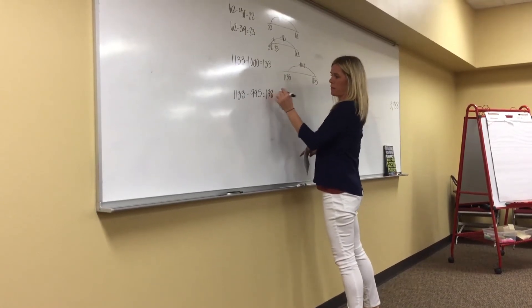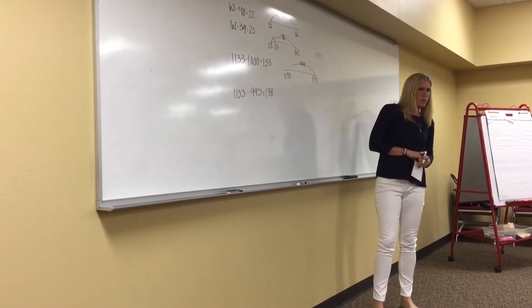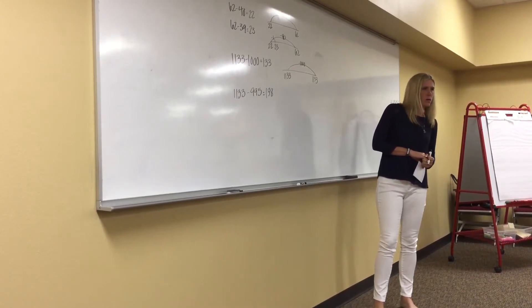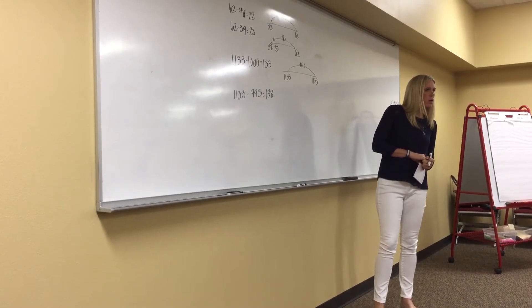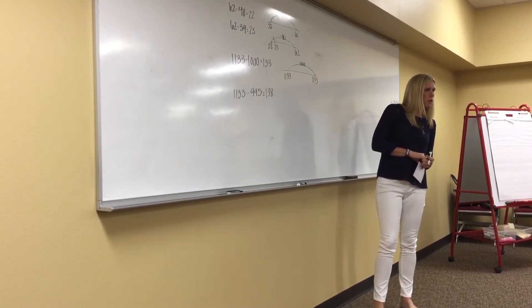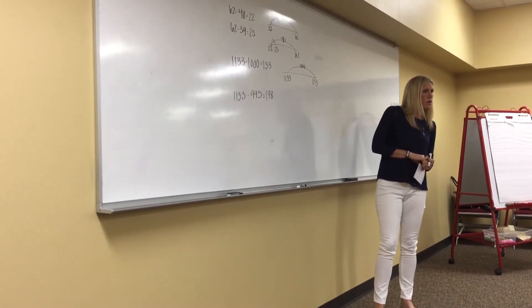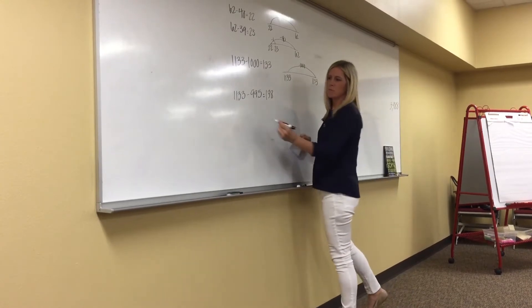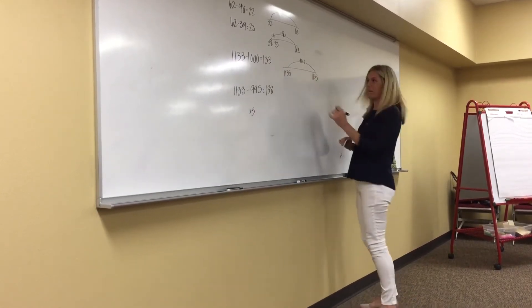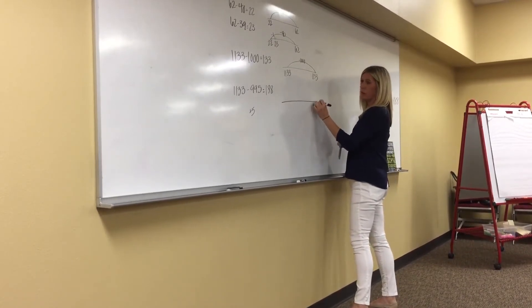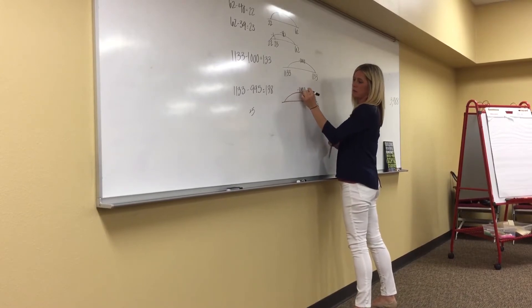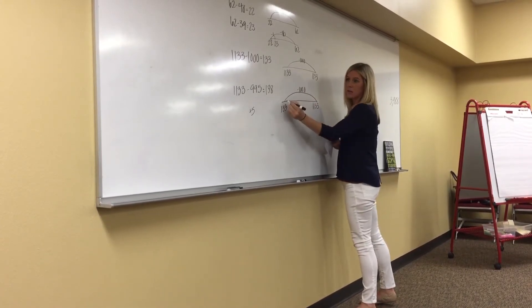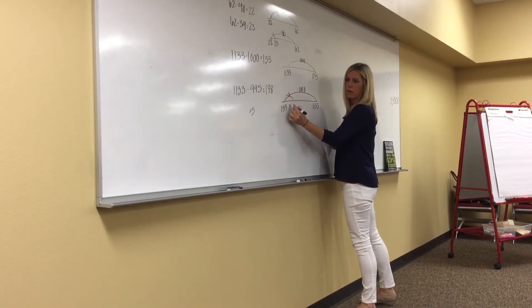Becky, I saw something interesting on your paper. Can you tell me what you wrote down? I drew my number line with 1133 on the right side, did the backwards arrow to the left — minus a thousand — which took me back to 133, and then I added five. Why did you add five? Because 995 was five less than a thousand. So you said: if I subtract a thousand, that puts me at 133 — but that's too much. How much too much? Five too much. So I can adjust by putting five back on to get to 138.